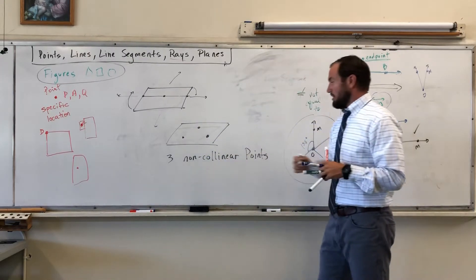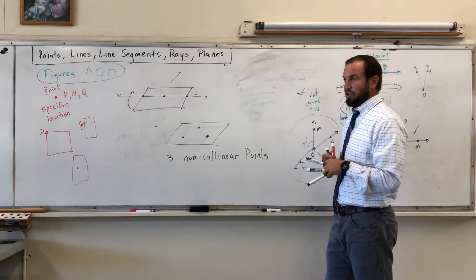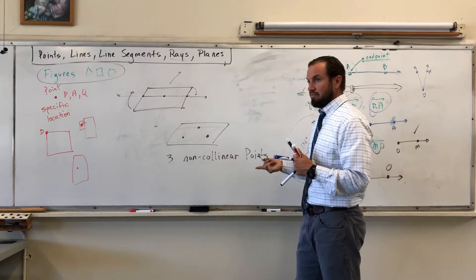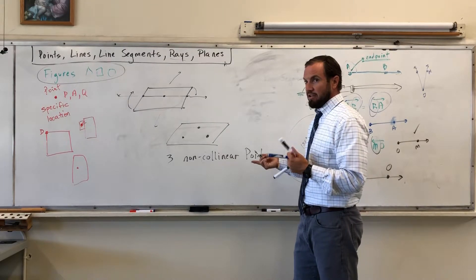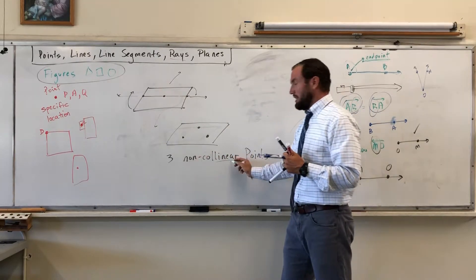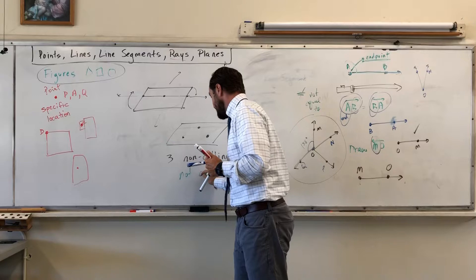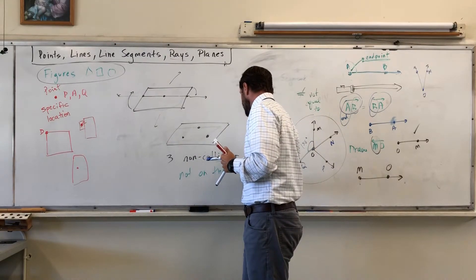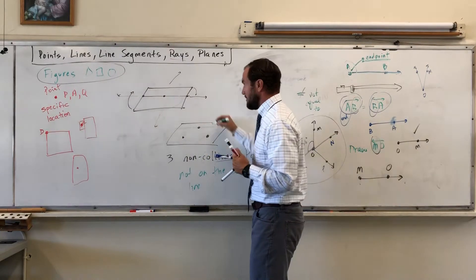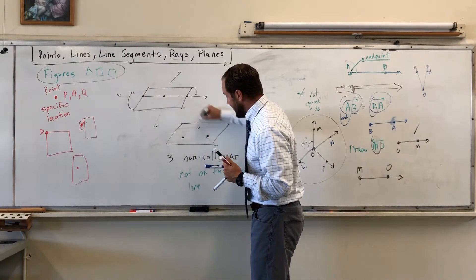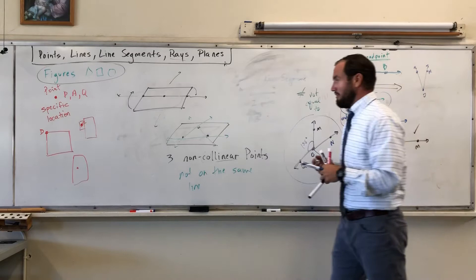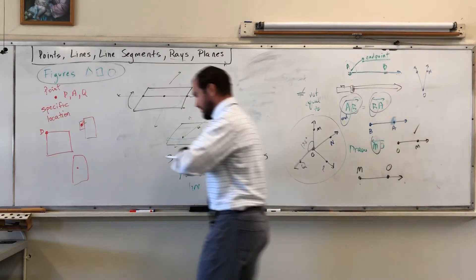The word 'non-collinear' defines itself: 'co' means the same, 'linear' means on a line. So 'non-collinear' means not on the same line. These points are non-collinear because I cannot draw one straight line through all three of them.